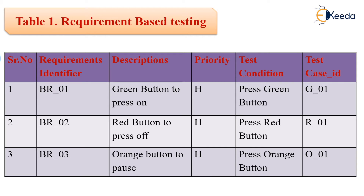The table shown is a sample requirement specification for a lock and key system. The first column is a serial number, then requirement identifier, description — for example, when the green button is pressed, what is returned. It is prioritized as high, severe, medium, or low. The test condition specifies at what condition it should be tested, with a test case ID such as G_1. A red button is for pressing off, and the orange button is for pause.